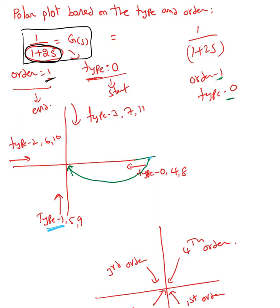The type tells us the number of poles at the origin. In the first example, there are no poles at the origin, so the type is zero. In another example, 1 over (1+2s) times s, there are two poles so the order is two, and there is one pole at the origin so the type is one. That's how we define order and type.